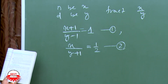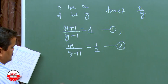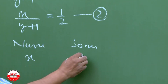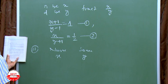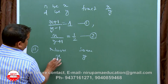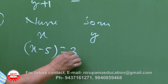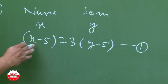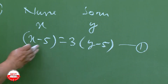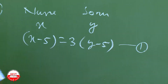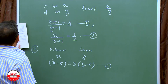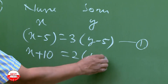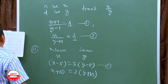Second part of Q2: 5 years ago, one person's age was 3 times the other's. So X minus 5 is equal to 3 times (Y minus 5) — rearrange to form equation 1 with variables on one side and numbers on the other. Ten years later, Nuri will be twice as old as Sonu: X plus 10 is equal to 2 times (Y plus 10). Frame this as equation 2 and solve.